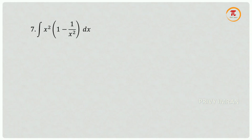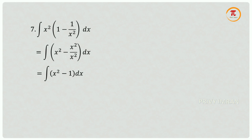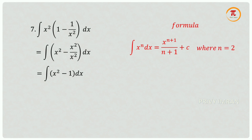Question number 7: integration of x squared into (1 minus 1 divided by x squared) dx. Multiplying x squared inside gives x squared minus x squared divided by x squared, so the second term cancels, and the modified question is integration of x squared minus 1 dx. Using the power formula where n equals 2 for the first term gives x cubed divided by 3, and integration of 1 dx gives x, so the required answer is x cubed divided by 3 minus x plus c.